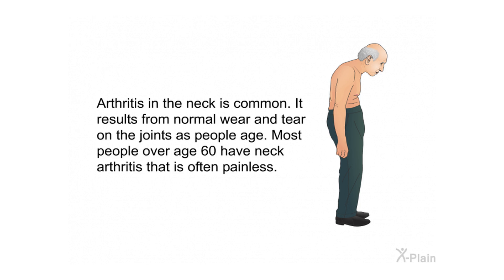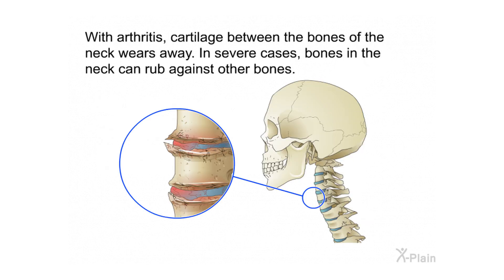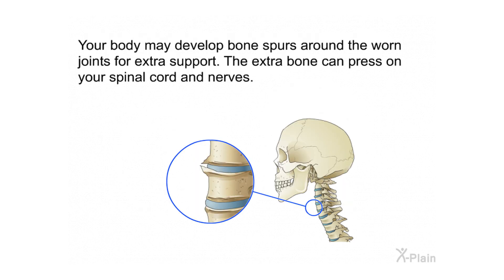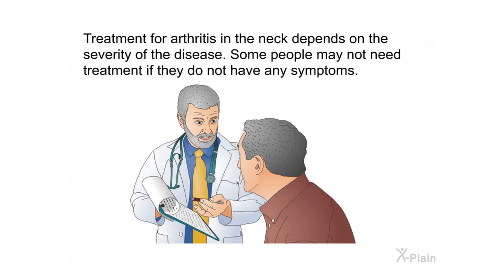Arthritis in the neck is common, resulting from normal wear and tear on the joints as people age. Most people over age 60 have neck arthritis, which is often painless. With arthritis, cartilage between the bones of the neck wears away. In severe cases, bones in the neck can rub against other bones, and the body may develop bone spurs around the worn joints for extra support. The extra bone can press on the spinal cord and nerves.